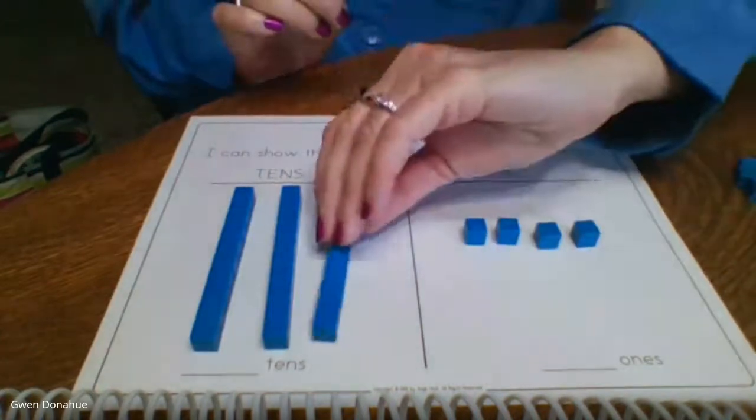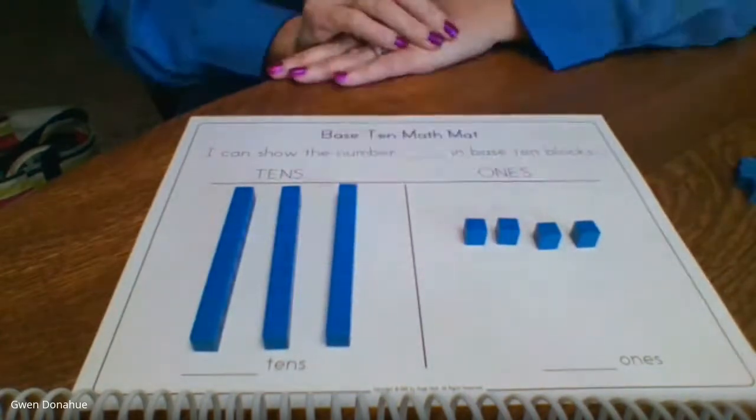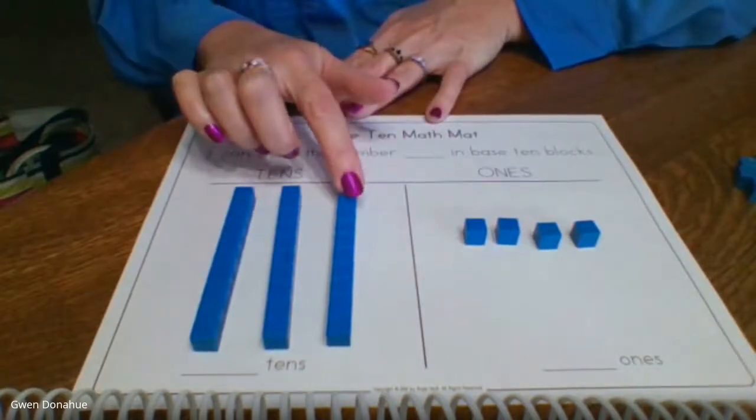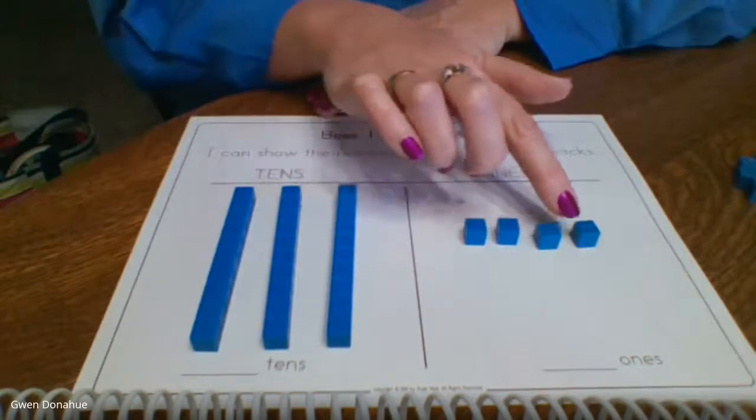What happens if I added another one? That's why I needed you to be able to count by tens. 10, 20, 30, 34.